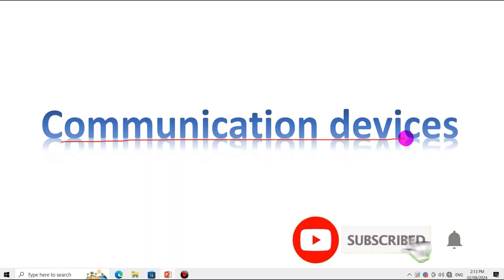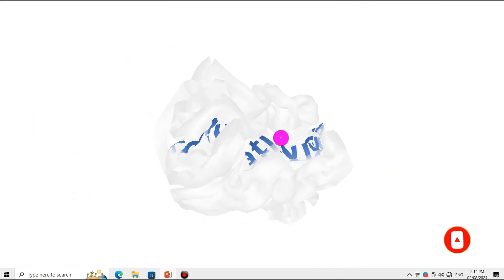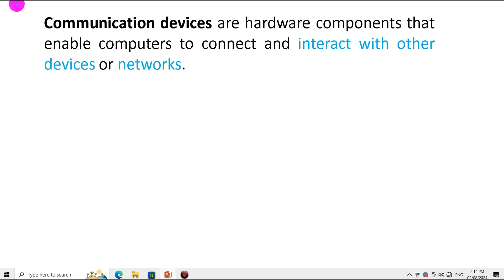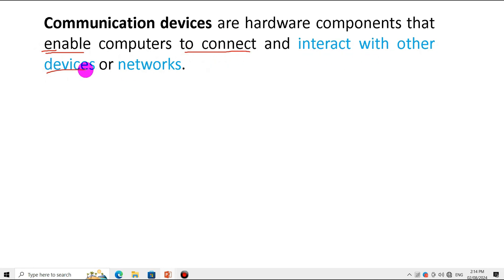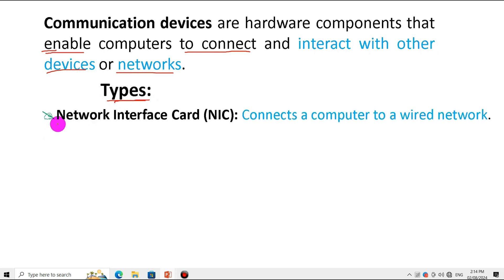Let's define what communication devices are in computer hardware components. A communication device is a hardware component that enables or allows a computer to connect and interact with other computer devices and networks. One common type is the network interface card, which is found in laptops and desktop computers.